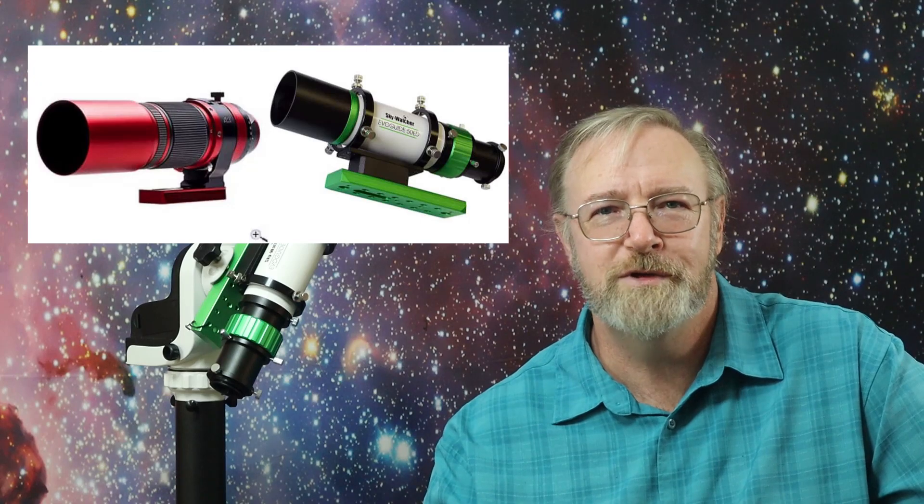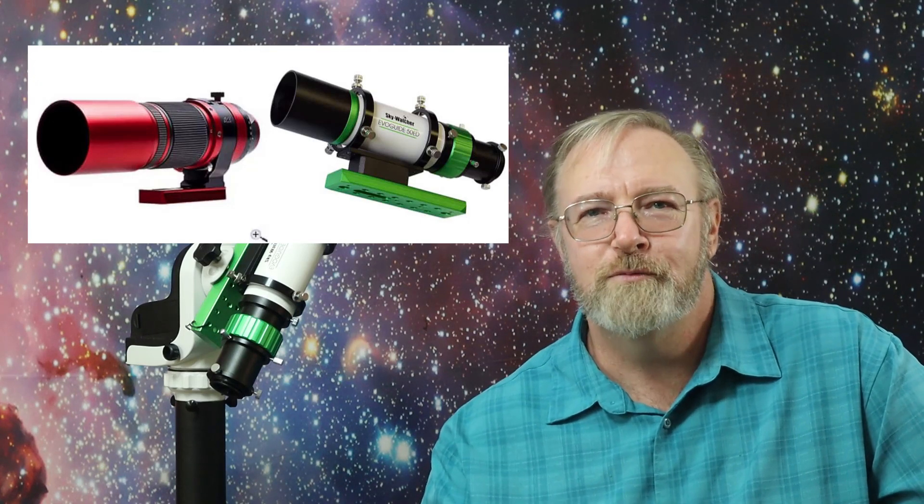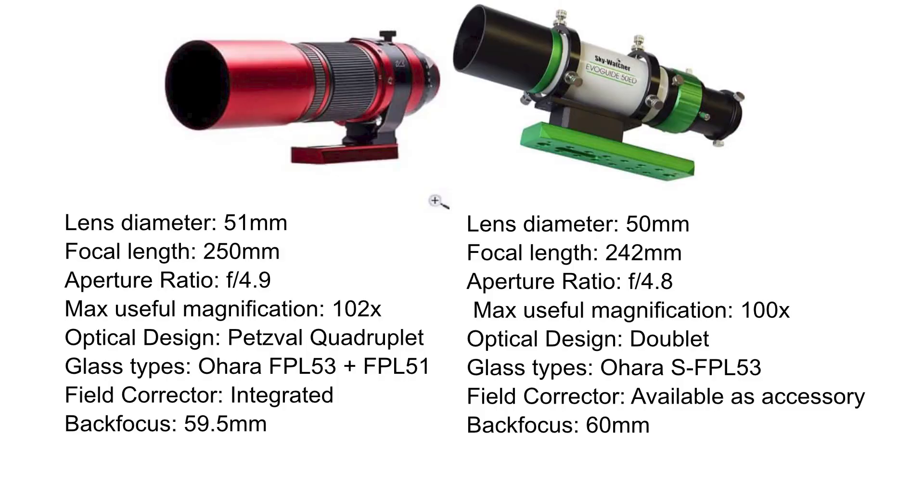Well, mostly it started because I was looking at the REDCAT51, which is a beautiful, petzval designed quadruplet APO scope, but out of my price range. The EvoGuider 50 is an ED scope with a close set of specs. Although it's only an ED doublet, it has a similar focal length. Take a look at the comparison here.